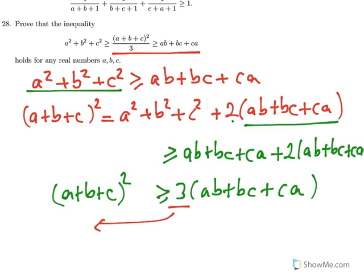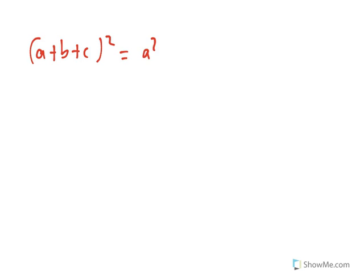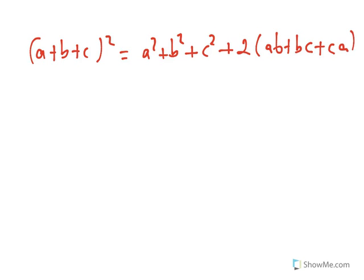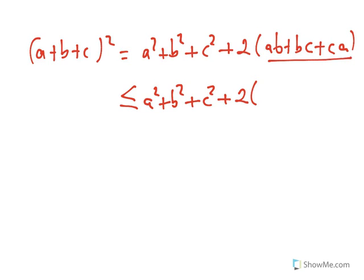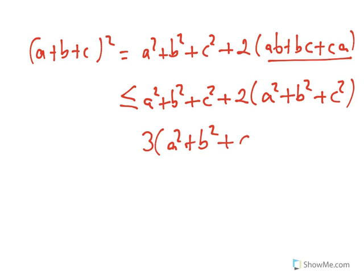Similarly, if we replace ab plus bc plus ca by a squared plus b squared plus c squared, we get that a plus b plus c perfect square equals a squared plus b squared plus c squared plus two times something smaller than or equal to a squared plus b squared plus c squared. So that gives us three times a squared plus b squared plus c squared.